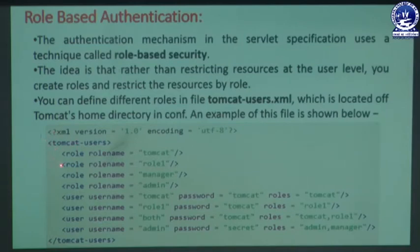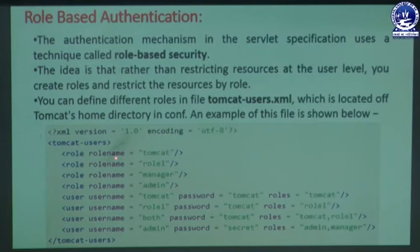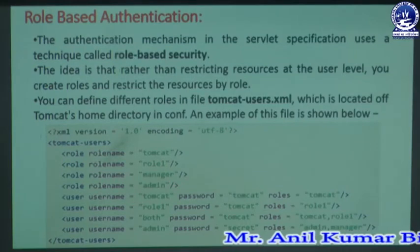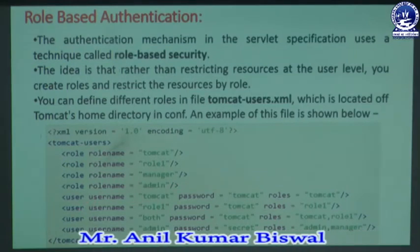Inside the tomcat-users tag we contain sub-tags named as the role tag. That role tag contains an attribute known as rolename. In that rolename we can put some name — names that can process that site or server. The first rolename is 'tomcat', the second is 'role1', and we also have 'manager' and 'admin'. Here we can set the user type — which type of users can access the JSP pages.